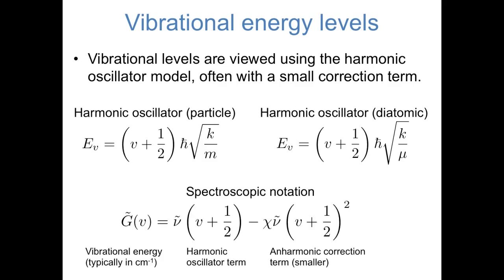In spectroscopy, the ideas are the same but the notation is a little bit different. The equation at the bottom of this slide represents the vibrational energy of a diatomic molecule in spectroscopic notation. The tildes just mean that in spectroscopy, we typically work in units of wave numbers, or reciprocal centimeters, rather than more traditional energy units like joules. The first term is nu-tilde times V plus 1/2 — that is, V plus 1/2 times a collection of constants, just as the harmonic oscillator model tells us. The second term is a collection of constants times V plus 1/2 squared, which is an experimental correction to the harmonic oscillator model. For our purposes in this video, we will ignore this second term and assume that vibrational energy is perfectly captured by the harmonic oscillator model.